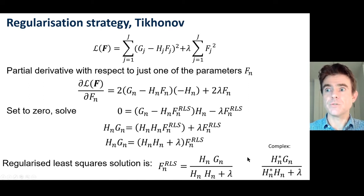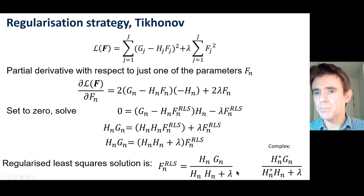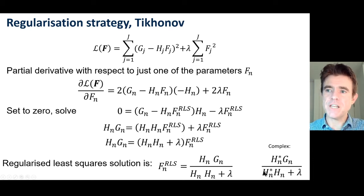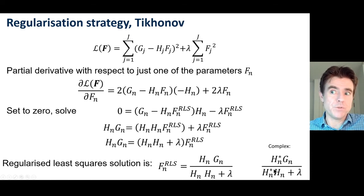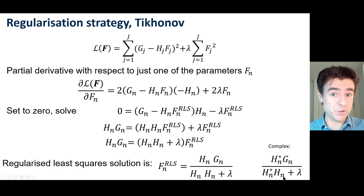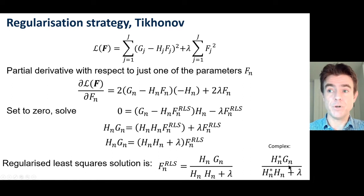Compared to the previous formula — which was simply g over h — we now have this plus lambda term. Likewise, the regularized solution has plus lambda in the denominator. What this does is inhibit small values of h*·h. If h*·h gets very small or even goes to zero — implying no possibility of recovering a frequency — the plus lambda comes to the rescue and stops division by zero. It effectively inhibits large amplifications and prevents division by very small values.